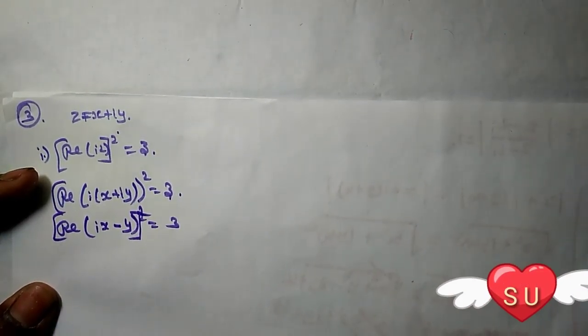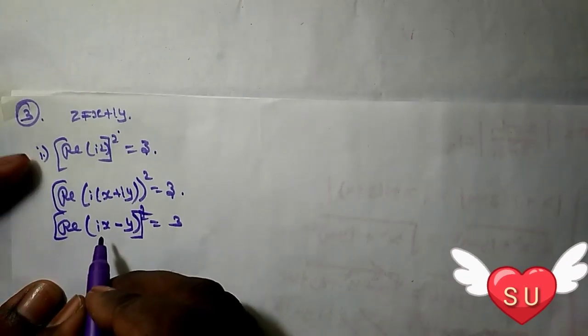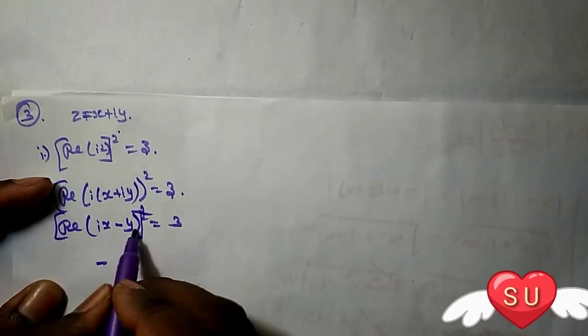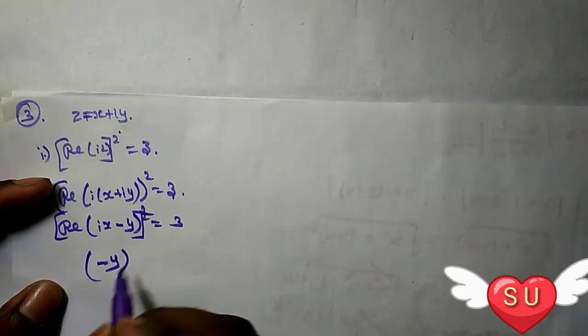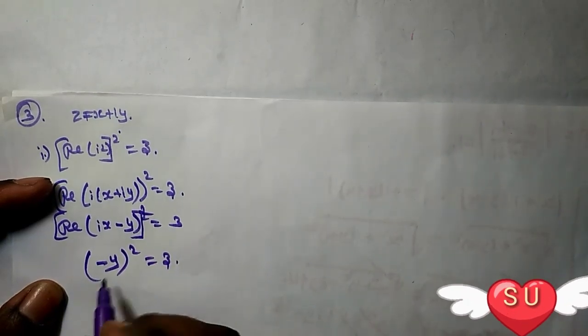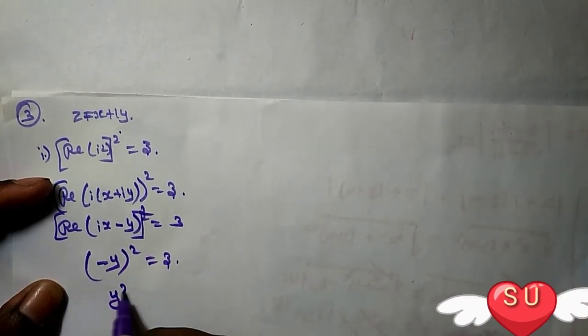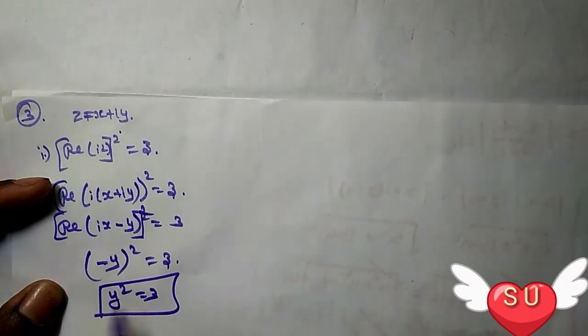For a real value, the real part is minus y. So minus y squared equals 3, which gives us y² equals 3. This is the answer.